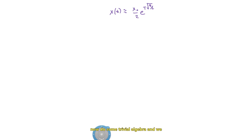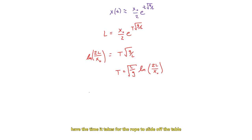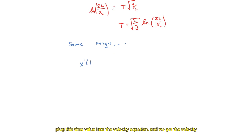Now do some trivial algebra and we have the time it takes for the rope to slide off the table. Plug this time value into the velocity equation and we get the velocity of the rope right before it becomes a projectile. The velocity is equal to the square root of gravity times the length of the rope. And now we're done.